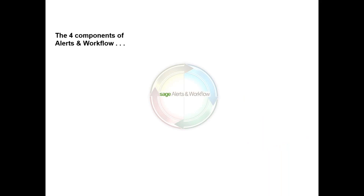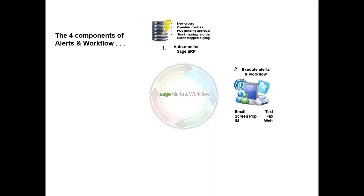Let me paint the four basic components of Sage Alerts and Workflow. It begins by automatically monitoring your Sage ERP application for any business conditions that are important to you — and that last statement bears repeating: any business conditions that are important to you. Whether it's sales being placed with a gross margin that's too low, or automatic identification of duplicate records in inventory or elsewhere — any condition that's important to you can be monitored and responded to by Alerts and Workflow.